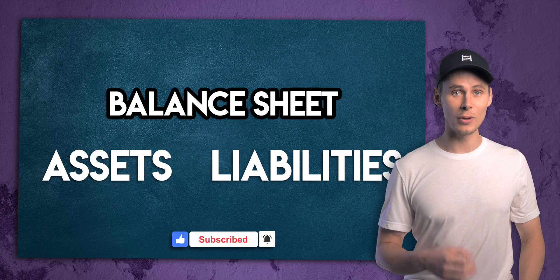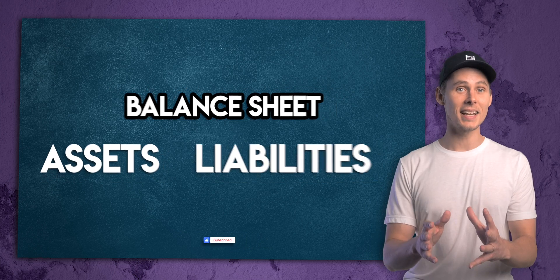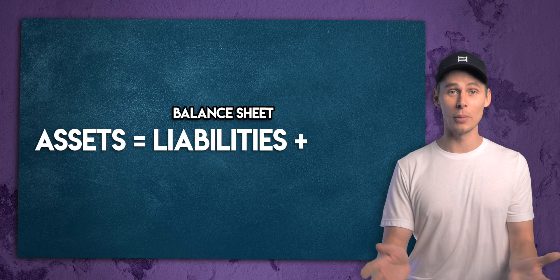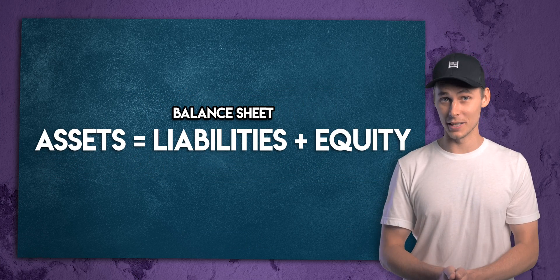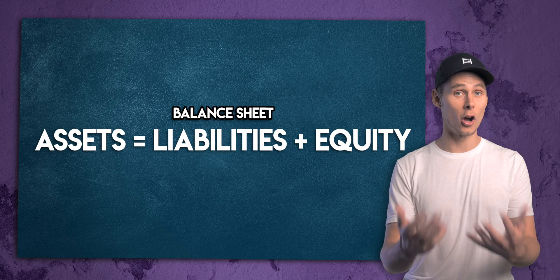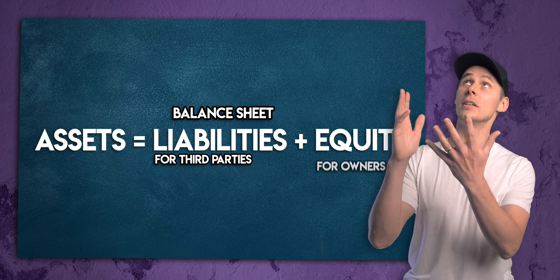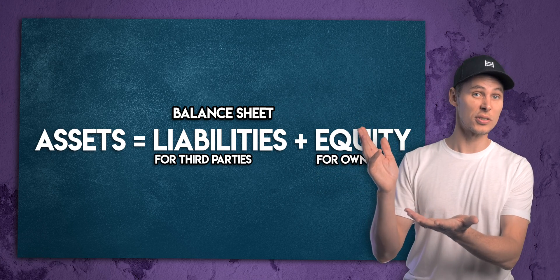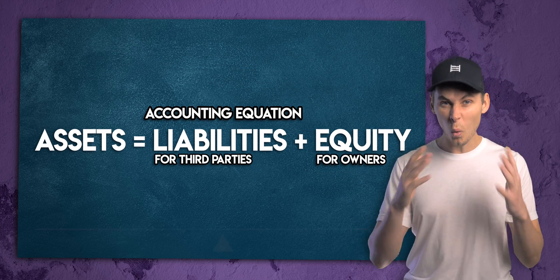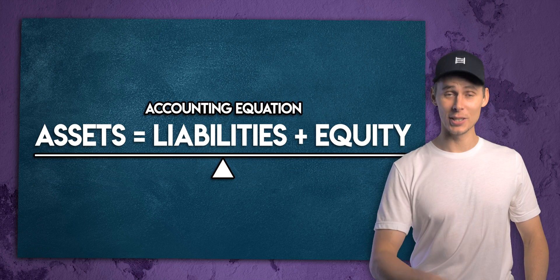Luca came to the rescue and solved this with one simple formula. He said that assets are equal to liabilities plus equity. A business owns assets, it owes liabilities to third parties, and equity to its owners. This is the accounting equation and it always has to balance.